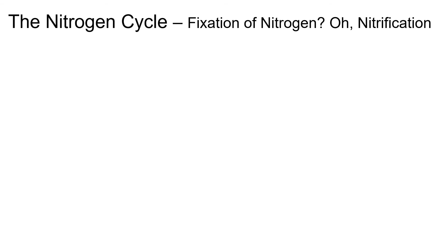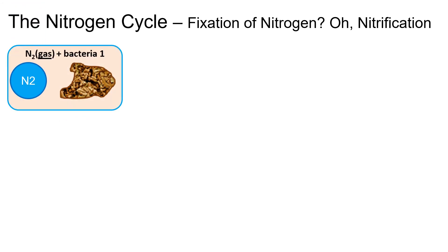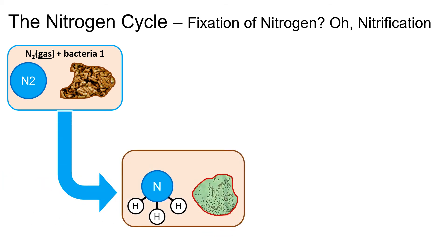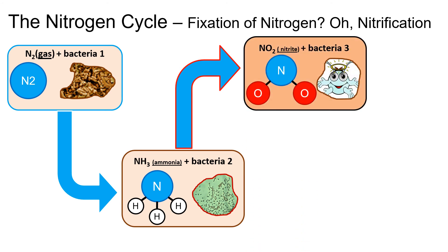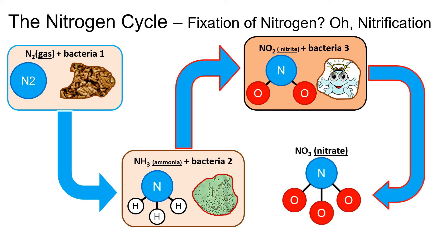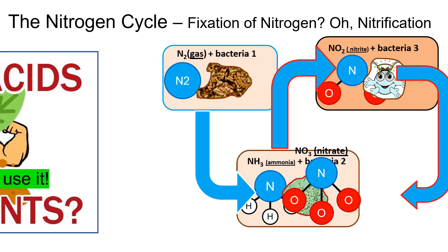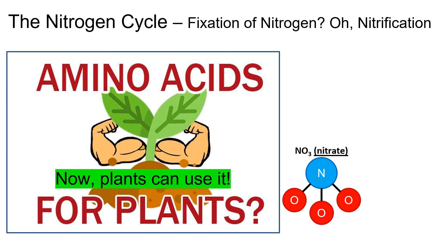The nitrogen cycle: fixation of nitrogen. We start with free nitrogen and bacteria — their interaction creates ammonia. That ammonia then interacts with another bacteria and is broken down and changed into a nitrite. Finally, a third bacteria performs one of the most important jobs and turns that nitrite into a nitrate. Nitrates help create amino acids, so now plants can use nitrogen.